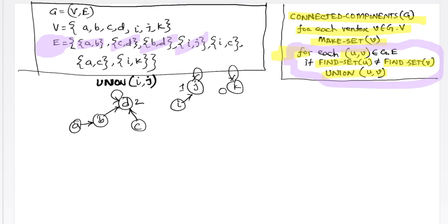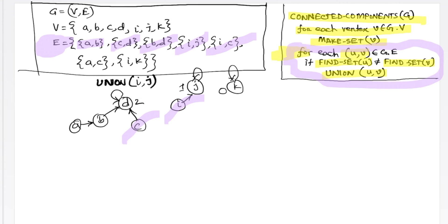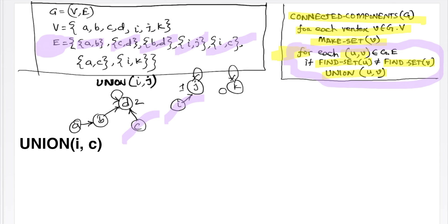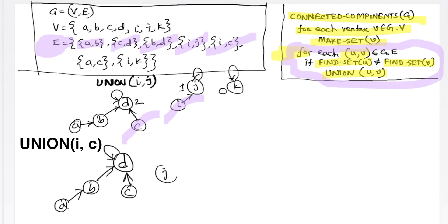Now the next edge is I, C. Notice that I is here in this rooted tree and C is here in this rooted tree. Therefore, they are in two different trees, so we will merge them. To merge these two trees, we will make the root of the tree that has higher rank the root of the combined tree. As a result, D will be the representative of the tree. J will become the child of D, I will remain the child of J, and the rank of this new tree will be 2. Here the rest of the trees will remain the same, which only has K.